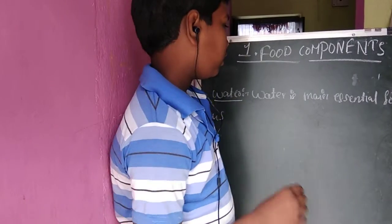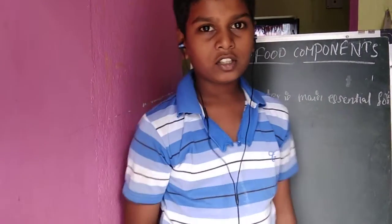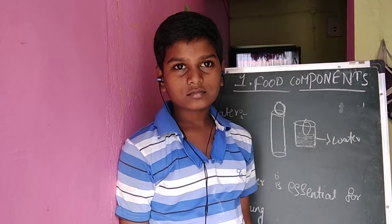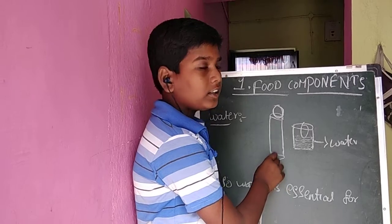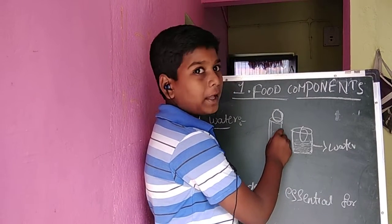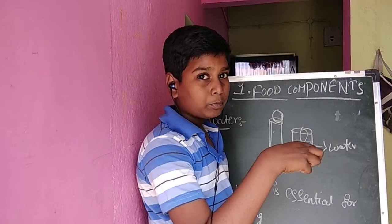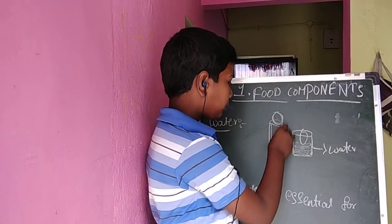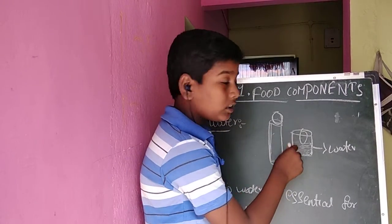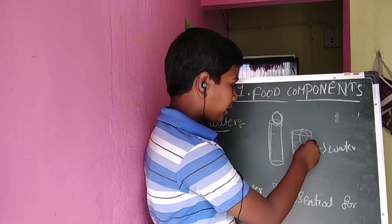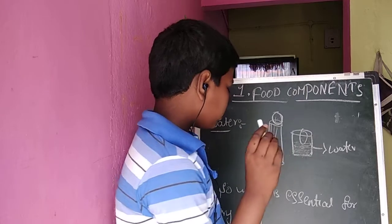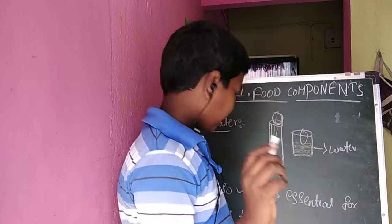Water. Water is the main essential for our body. Let us do one experiment. Take a PVC pipe and a sponge. Keep putting the sponge in and push it towards the end — it does not go. Why? Because if you dip the sponge in water and push again, it goes. Why? Because water is essential for everything.